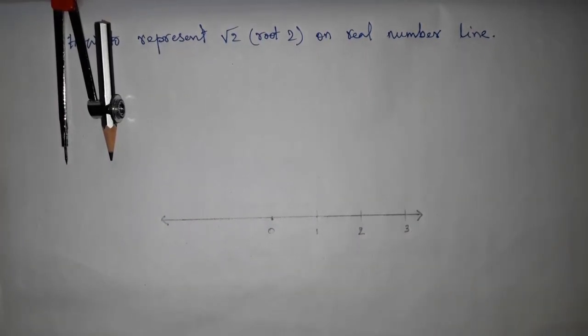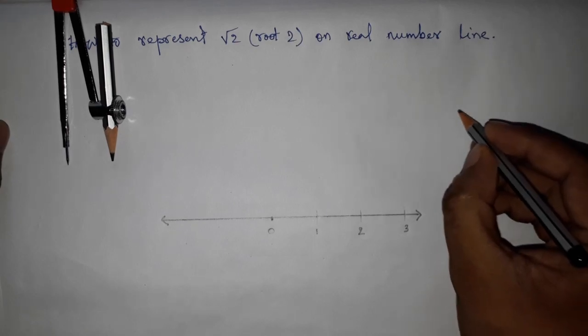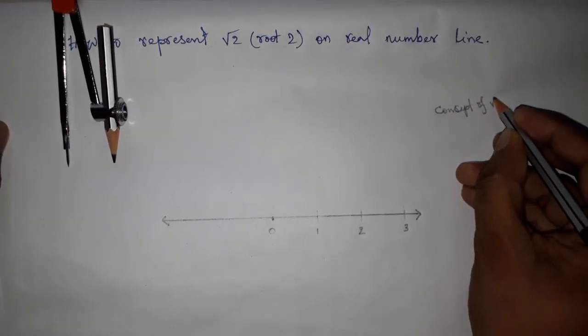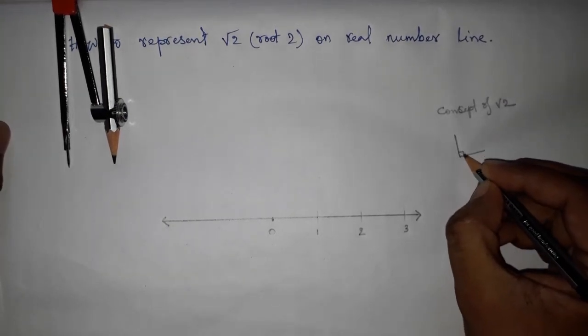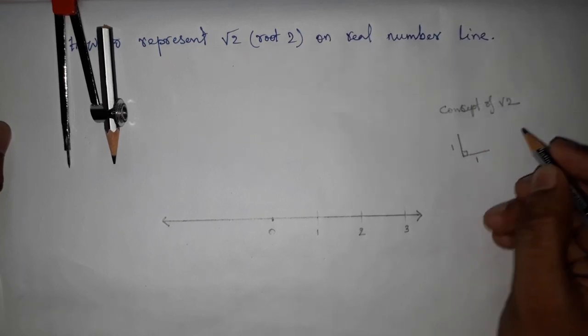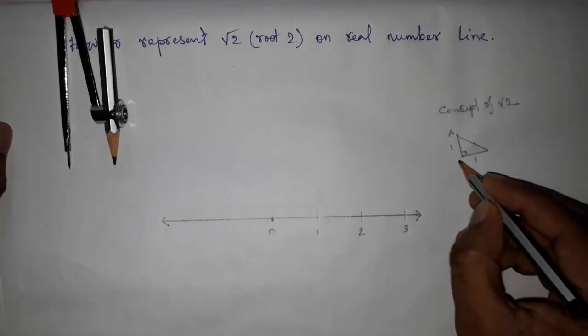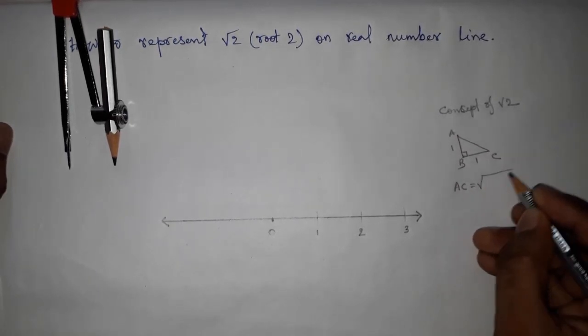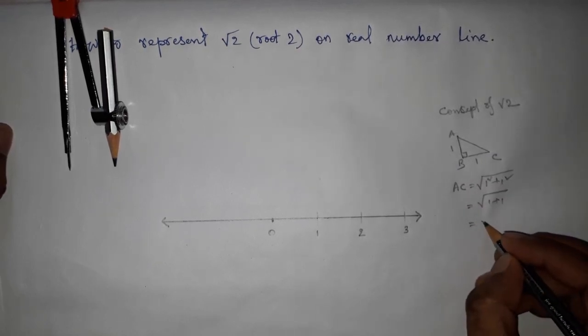Now I'm talking about the concept of √2. If there is an isosceles right angle triangle with base and height of 1, 1, then we have to find the hypotenuse of this isosceles right angle triangle by using Pythagoras theorem. By Pythagoras, it equals √(1² + 1²), which gives √2.